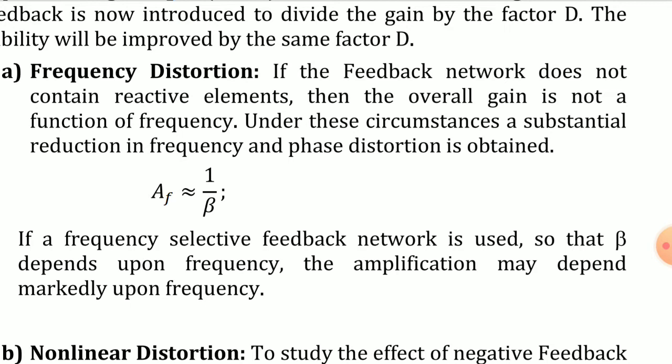Under these circumstances, a substantial reduction in frequency and phase distortion is obtained. The feedback gain is inversely proportional to beta, the gain of the feedback network. If a frequency-selective feedback network is used — meaning inductors or capacitors are used — then beta depends on frequency, and by reducing beta we can increase the feedback gain, so amplification may depend upon frequency.